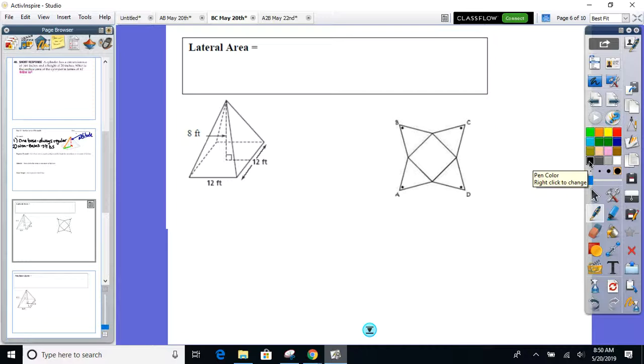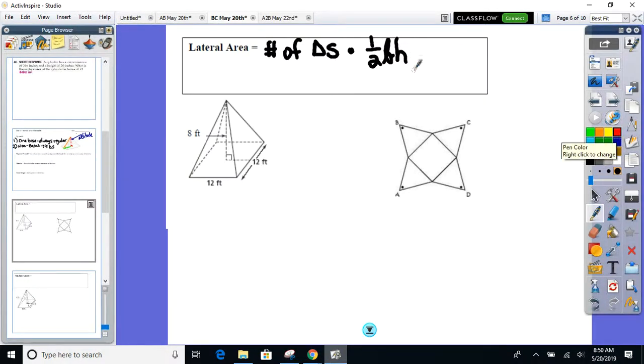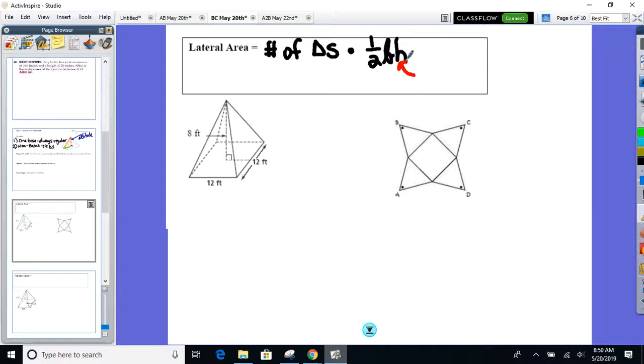Lateral area of a pyramid. I'm not going to give you a formula. What's the definition of lateral area from Friday? Everything but the base. What do I end up with if I take off the base of any pyramid? Triangles. So it's the number of triangles times its area formula, which is one-half bh. The h in this case is not the Mission Impossible one. That's the slant height. It is not the altitude. Please do not plug that in.